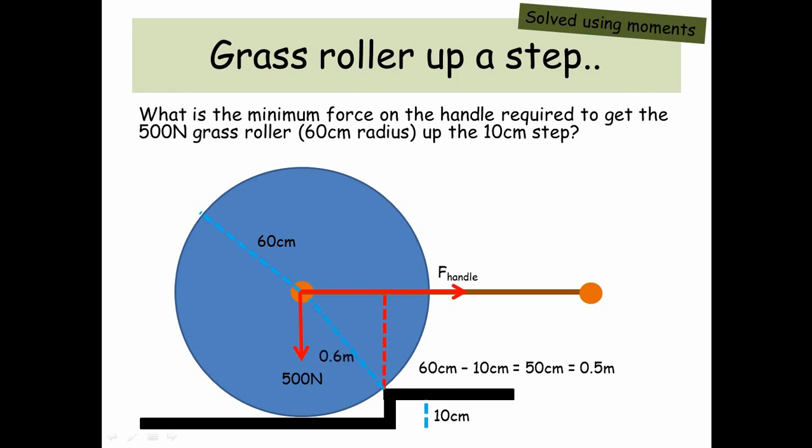And if we use a bit of Pythagoras we know that the hypotenuse from the very centre of the grass roller to the pivot point is 0.6. So if we do 0.6 squared which is the hypotenuse minus 0.5 squared we get an answer and then square root the whole thing we get 0.33. So we know this distance here is 0.33. So the 500 newtons its perpendicular distance to the pivot from its line of action is 0.33 metres.